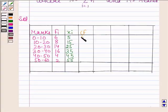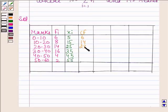Now we will find cumulative frequency. In the first row we have 6. Then 8 plus 6 is 14. 14 plus 14 is 28. 28 plus 16 is 44. 44 plus 4 is 48. 48 plus 2 is 50.